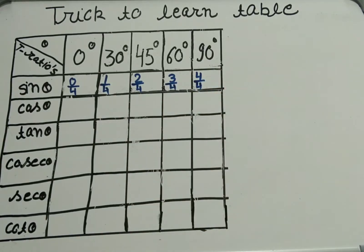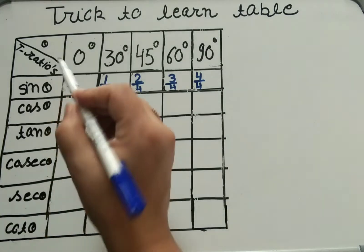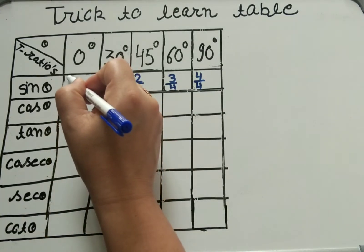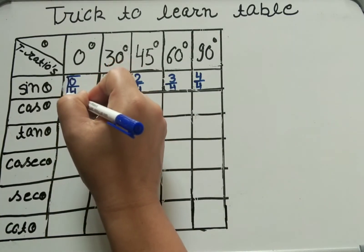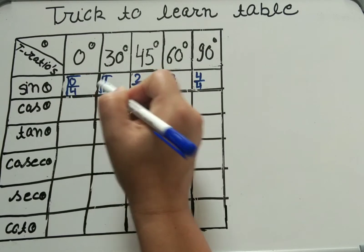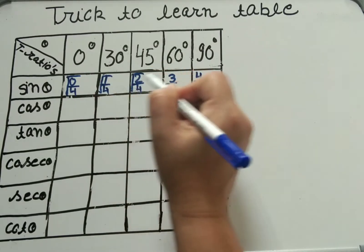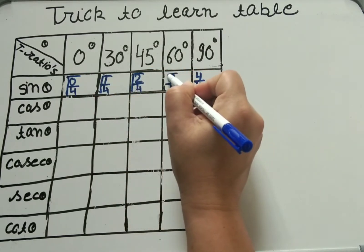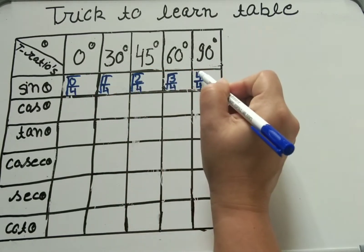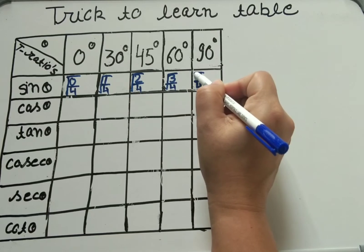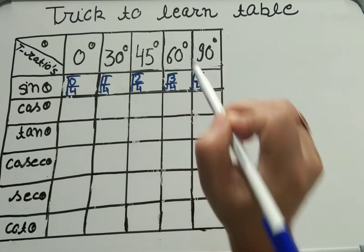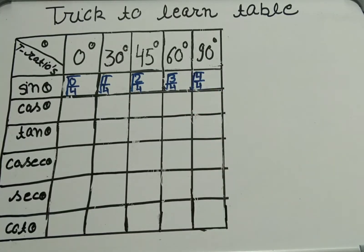In the next step, what you have to do is apply square root. We have applied square root on top of all of them.